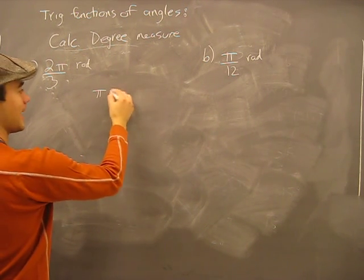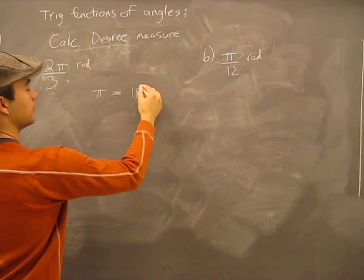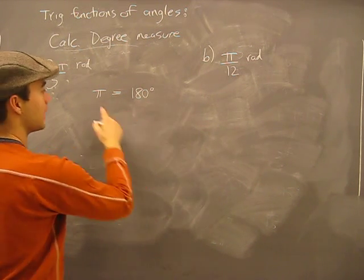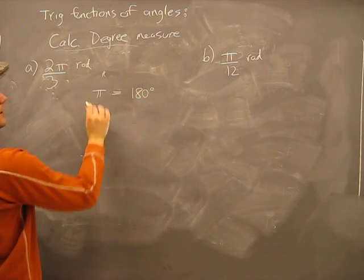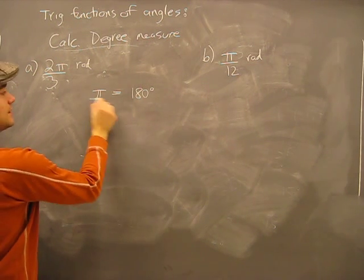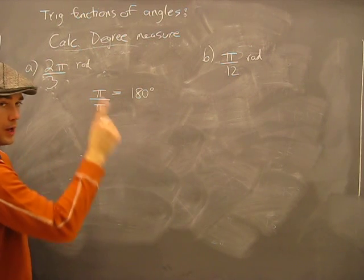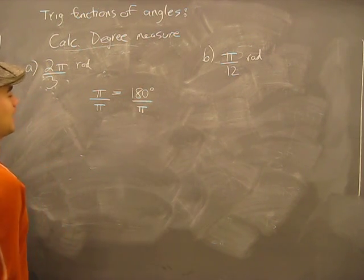We know that π equals 180 degrees. This is the radian side here, okay. Let's bring it down to one. I'll divide both sides by π, then I get one radian.